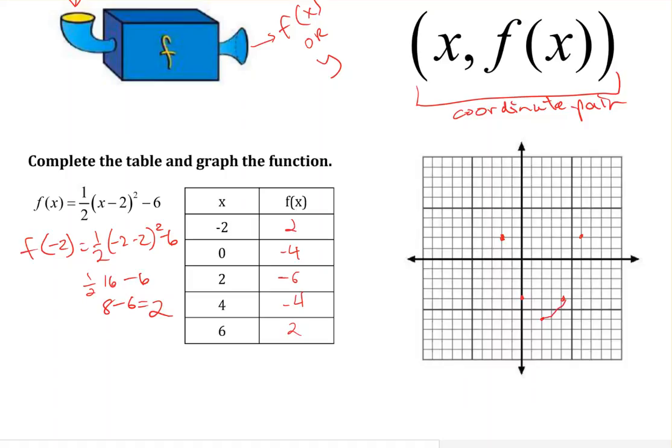Now, it's important that we not only are able to produce a graph like this, but also we remember what type of function this is so that our graph seems to make sense. And in fact, 2 and negative 6 we might have recognized as being the vertex of this parabola before we even started.